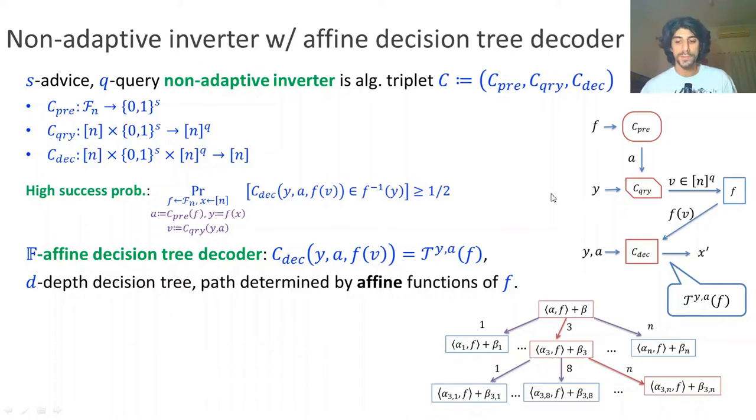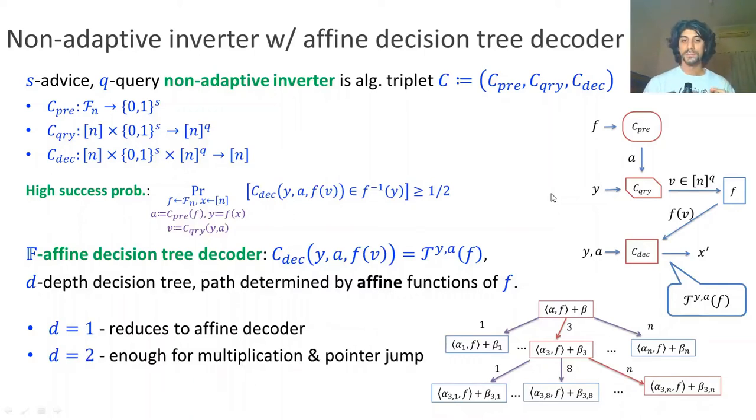This is interesting because d here is the depth of the tree, and using different depths we can create an entire spectrum of complexity of the decoder. When d equals 1, that reduces to the previous case, just having a single affine computation over the values of f. However, if I increase d by as little as 1, now d equals 2, that's already enough to perform multiplication and a single pointer jump between different queries. And if I take it to the extreme, d equals q, then this can describe any arbitrary non-adaptive inverter, which is the general case and most interesting.